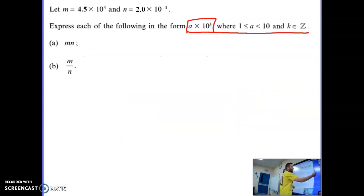We'll get exam style questions such as this one where it has some confusing notation that looks a little bit confusing. We'll break that down now. Let m equal 4.5 times 10 to the power 3, n equals 2.0 times 10 to the power negative 4. If you'd like, you can pause the video now, see if you can have a go at this question without any instruction.